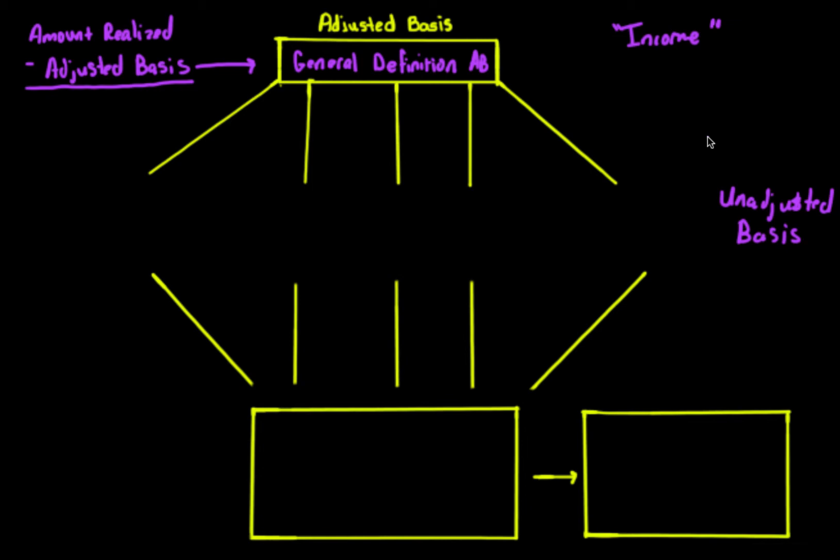Let me give you an example. Let's say you bought some stock for $1,000 a share. The stock goes up in value to $2,000 a week later and you sell it. Is the income going to be the full $2,000 you receive? Well, the Haig-Simons definition of income is getting at the fact that income in that situation is limited to the gain from that transaction. In the Internal Revenue Code's definition of gross income, one of those items says gain on property. To determine gain, there has to be some mechanism — and that's what adjusted basis is all about.